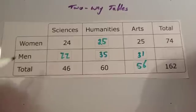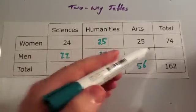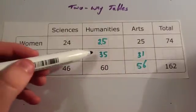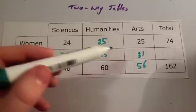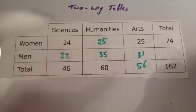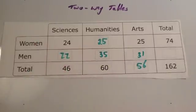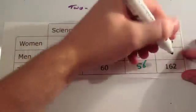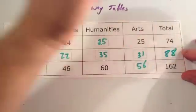Now let's work out how many men there are altogether. There are 22 doing sciences, 35 doing humanities, and 31 doing art. So if you add those together, you'll find out how many men there are altogether. If you add 22, 35, and 31 together, you get 88. So altogether there are 88 men.